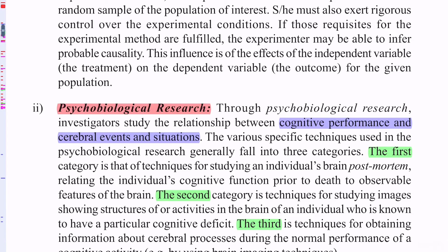The first category is techniques for studying an individual brain post-mortem, relating the individual's cognitive function to the brain. The second category is techniques for studying images showing structures or activities in the brain of an individual known to have a particular cognitive defect.